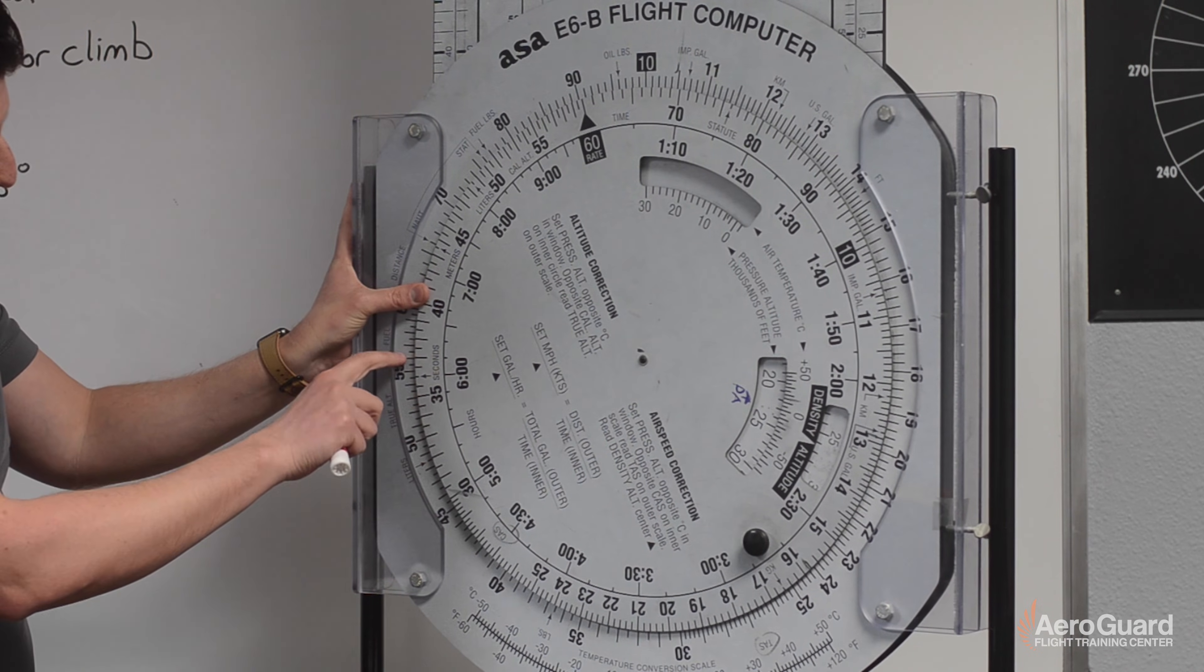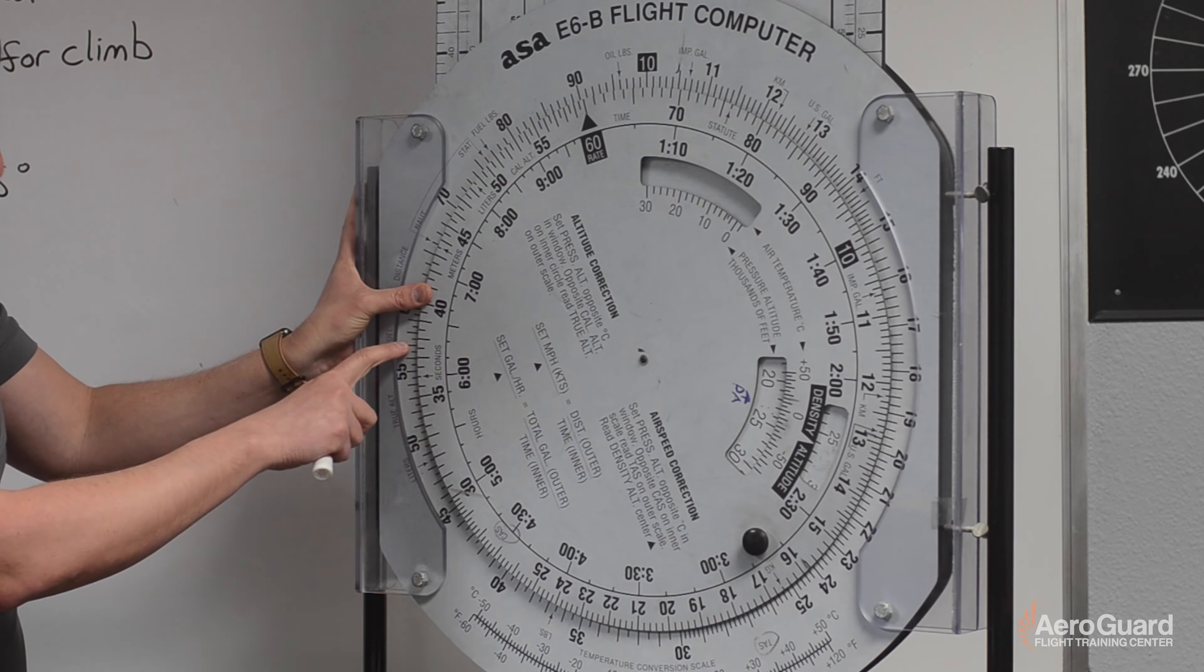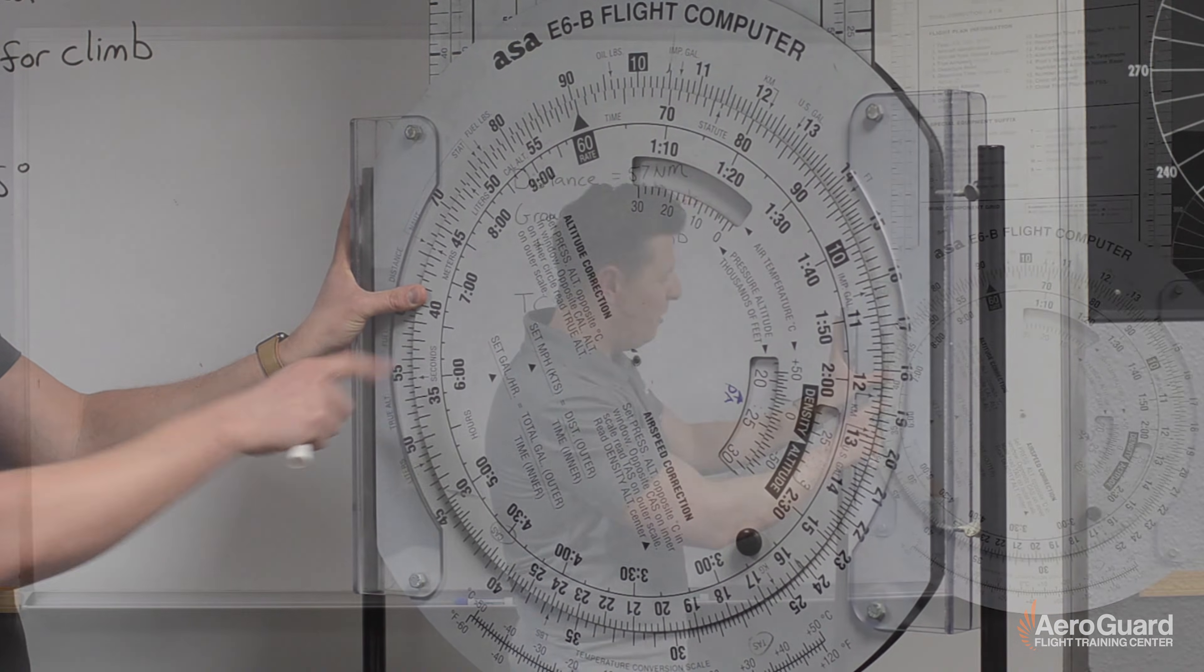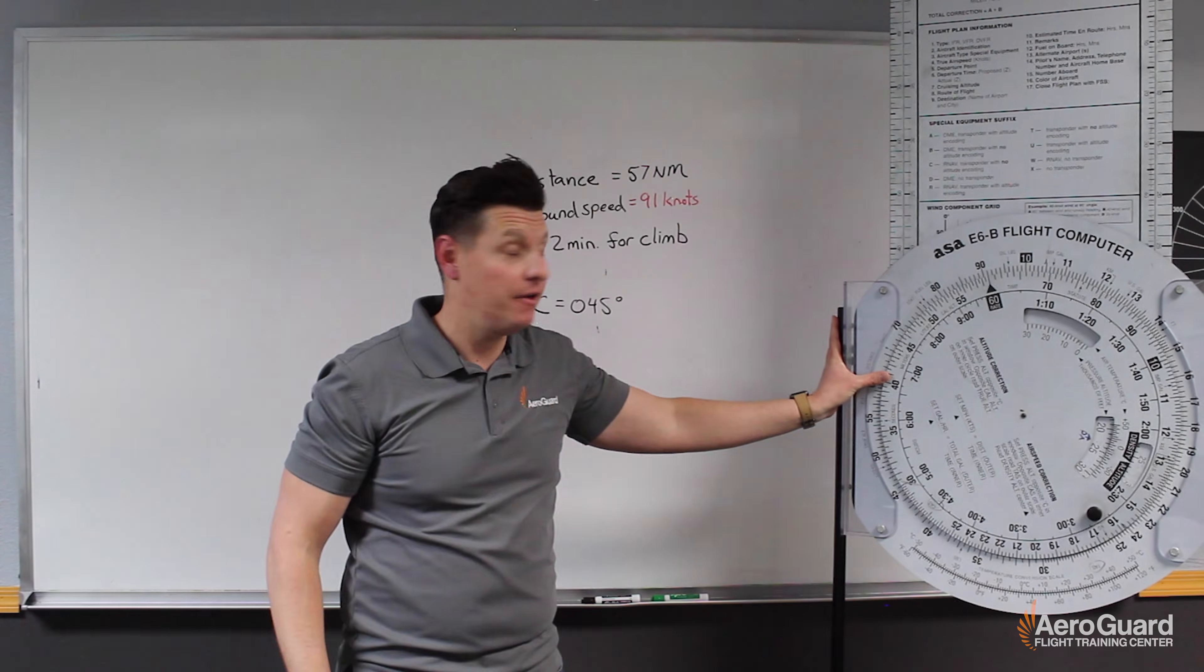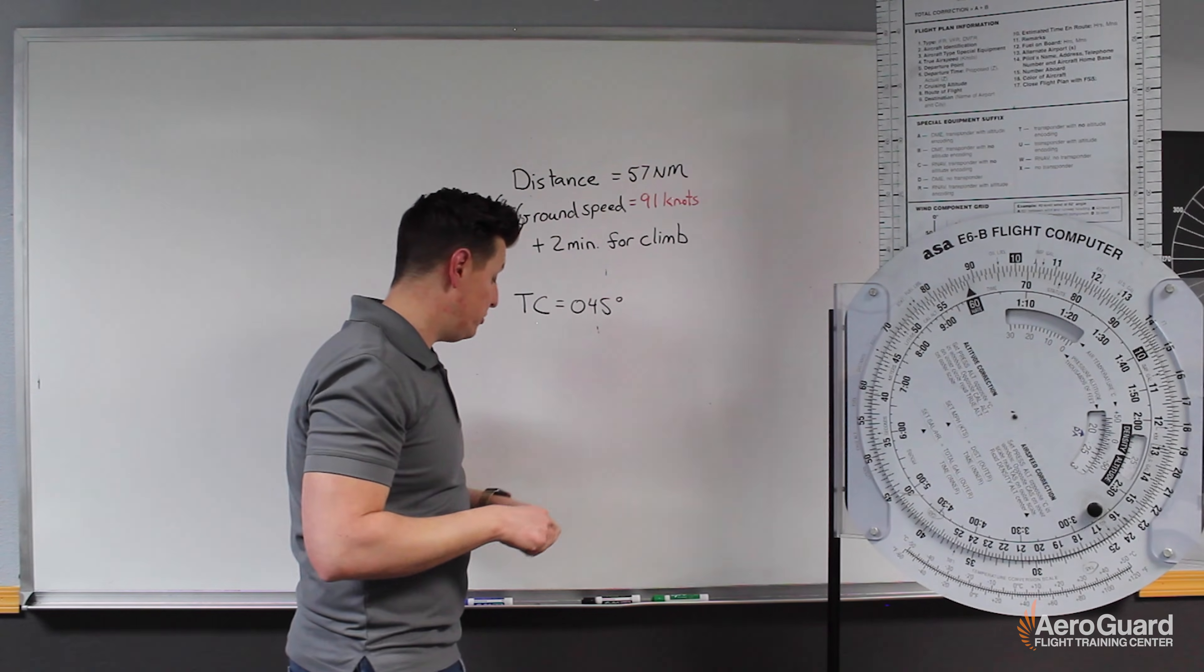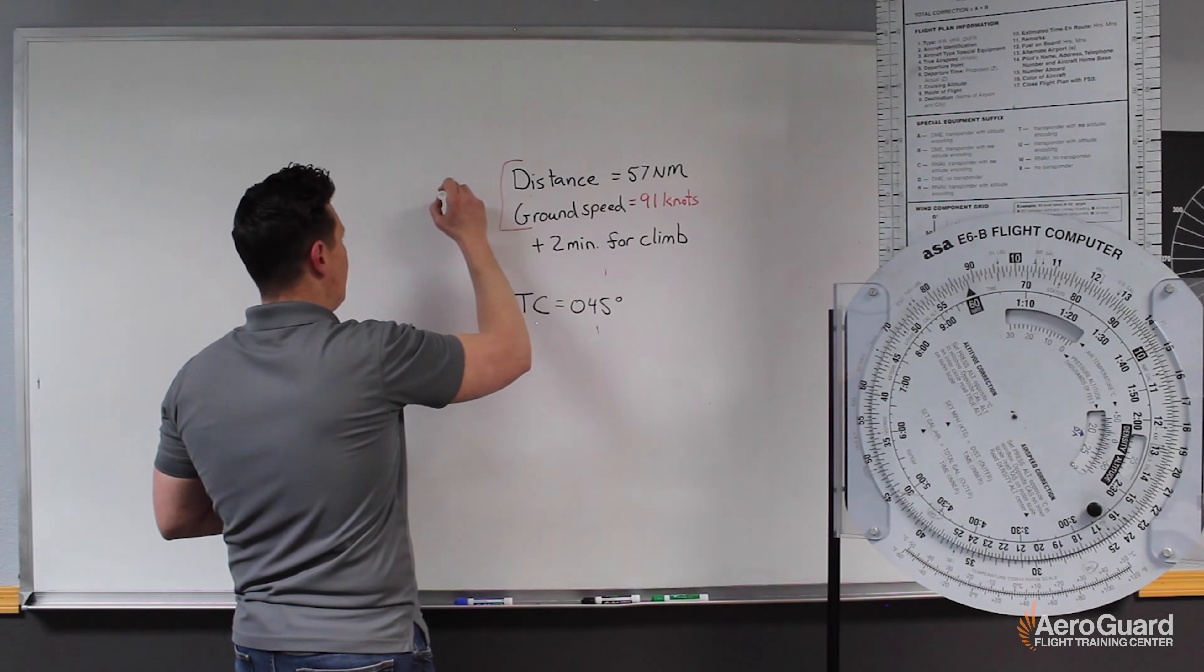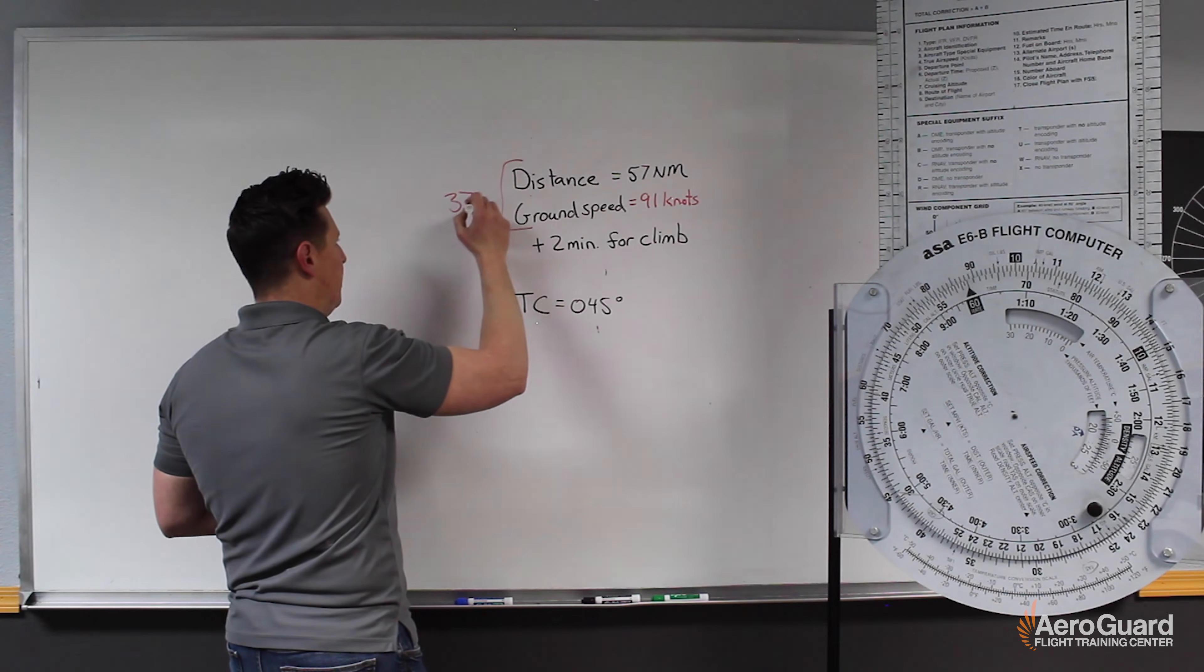So we have 55, 56, 57. And that's going to be across from the time. So the time is about 36, 37, 37 and a half. So our time in route based on these two is about 37 minutes.